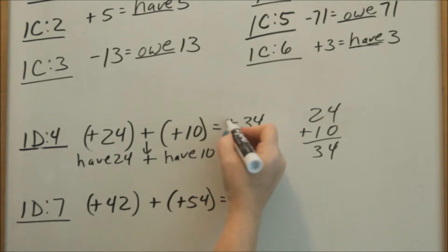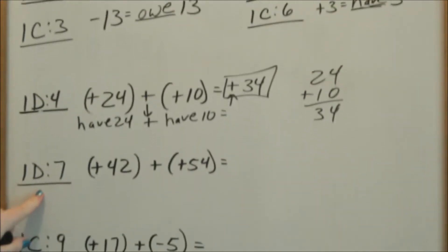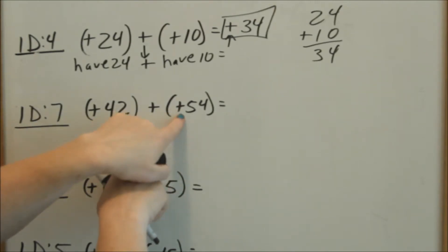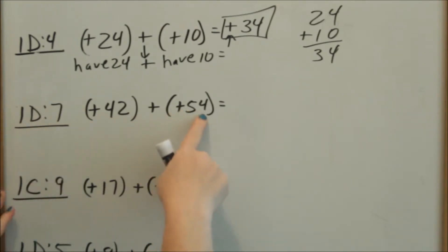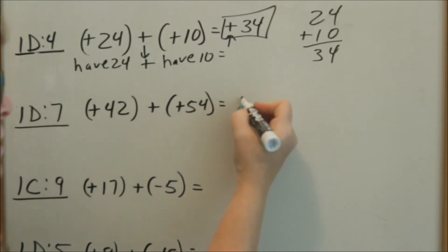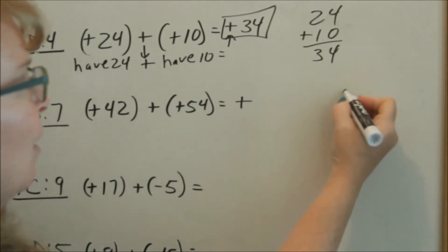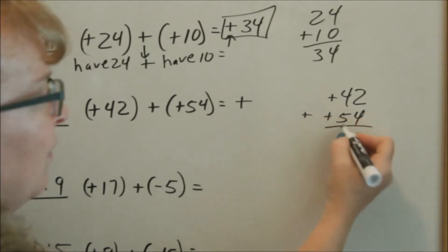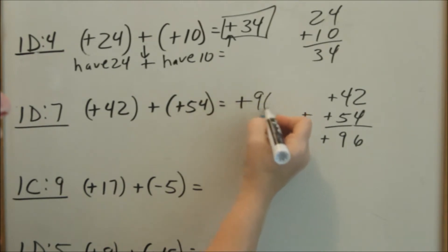It's really important to put the sign in your answer to show whether it's positive or negative — do you have money or do you owe money? Looking at number 7 on D, you have 42 and then you're adding having more. So in the end you're still going to have money. 2 and 4 is 6, 4 and 5 is 9, so you have 96.